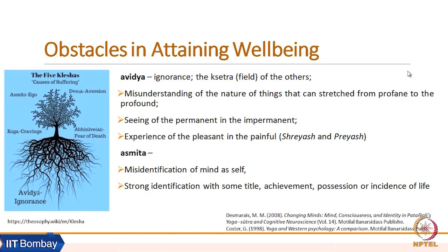Because of avidya, we choose two paths — one is called Shreyas and another is called Preyas. The path of Preyas looks very joyful in the beginning, but in the long run it becomes painful and causes suffering. The Shreyas path is doing something which might be painful in the beginning, but the long-term achievement through that is positive. Our ability to distinguish Shreyas and Preyas is a reflection of vidya and avidya.